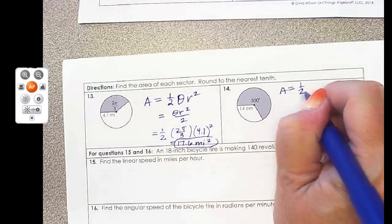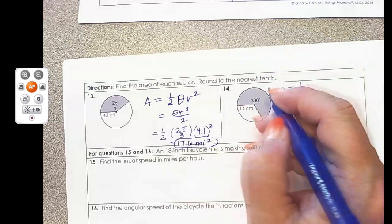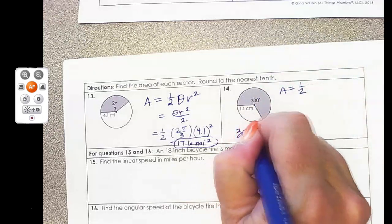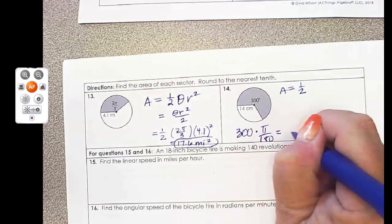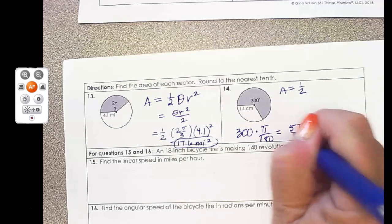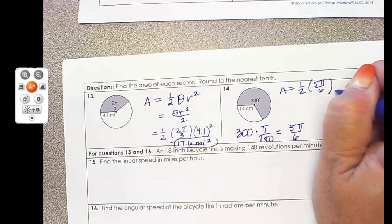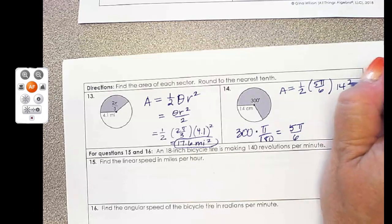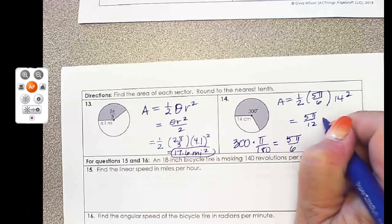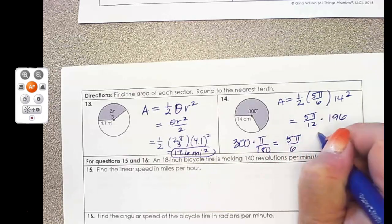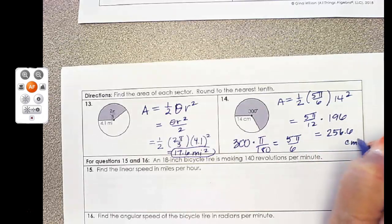And next, we have 1/2. And then I had to change my 300 degrees into radians. So I'm going to multiply that by π over 180, and I get 5π over 6. So I'm going to multiply that. And then my radius is 14, and I'm going to square it. So that equals 5π over 12 times 196, which is 256.6 square centimeters.